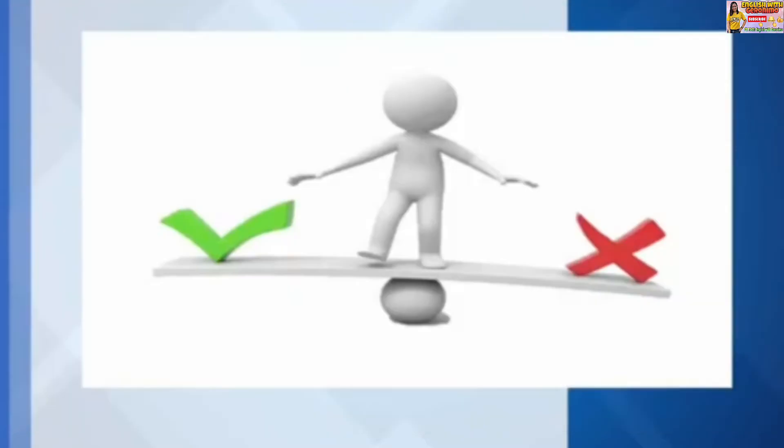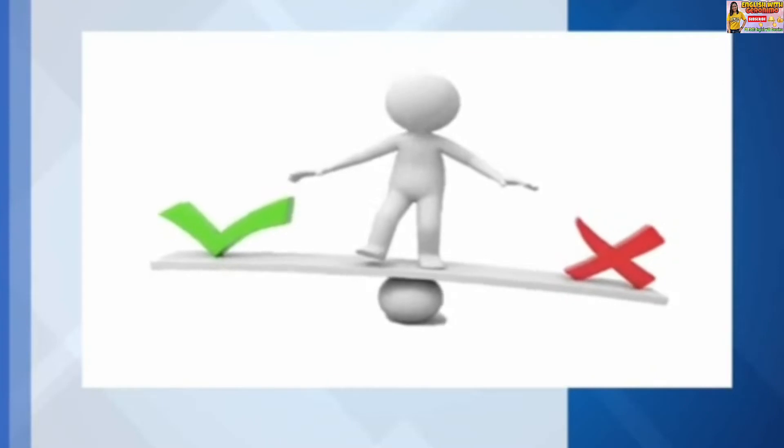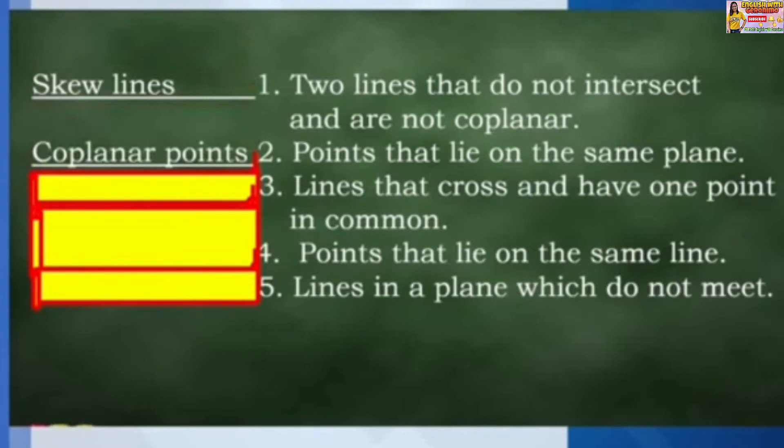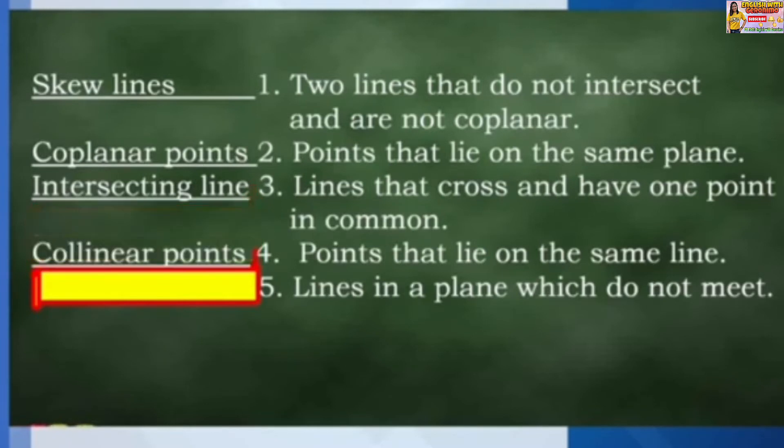And what are the answers? Number 1: Skew lines. Number 2: Coplanar points. Number 3: Intersecting lines. Number 4: Collinear points. And number 5: Parallel lines.